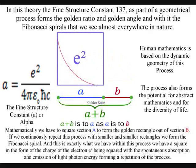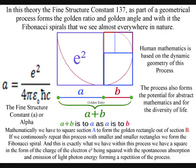Mathematically, we have to square section A to form the golden rectangle out of section B. If we continuously repeat this process with smaller and smaller rectangles, we form the Fibonacci spiral.